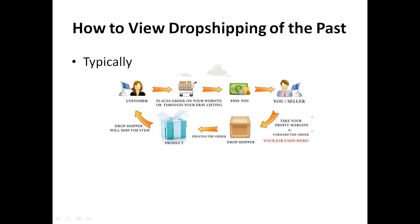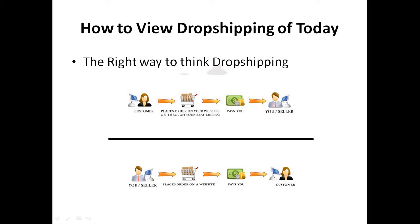This diagram is basically how dropshipping was looked at, and some people still look at it this way today. The customer buys an item from your eBay listing, pays you, you use the money to purchase from the dropshipper or supplier and send it to the customer. This is relatively accurate, but I have a problem with how it is visualized in your mind and how you use that to solve problems in your dropshipping business. So here is how I choose to look at dropshipping and how I suggest you look at it.